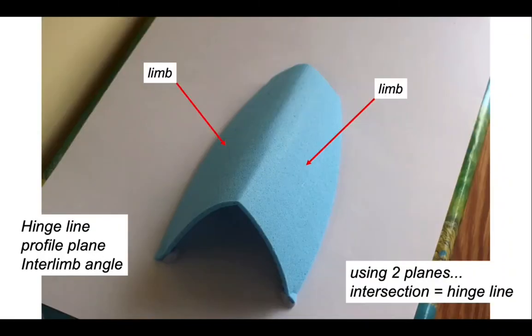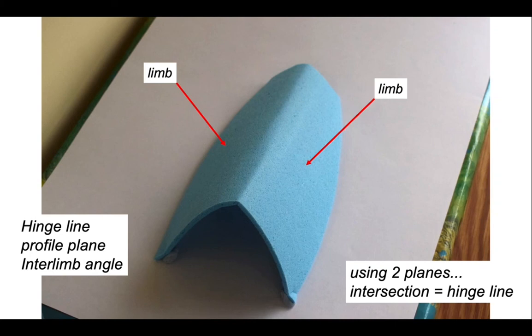To summarize: we take two plane orientations — bedding planes — from either side of the fold. Their line of intersection is the hinge line of the fold, reported with a plunge and a plunge direction. We find the fold profile plane because the hinge line is the pole to that plane. Then, knowing the attitude of the fold, we calculate the interlimb angle. It's a very simple method for establishing the geometry of folds.